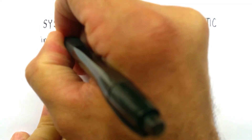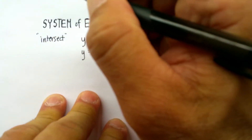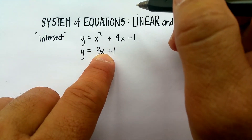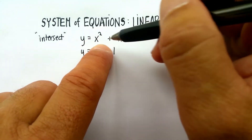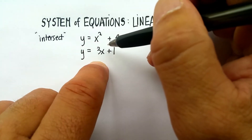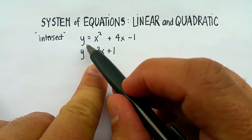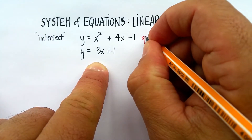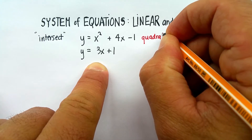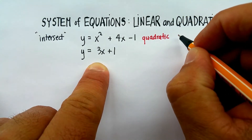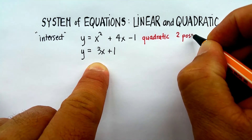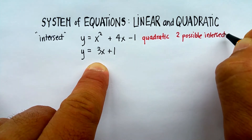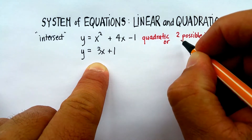You can tell how many solutions or intersections are possible by the degree of the equations involved. The degree is basically determined by the variable with the highest exponent. In this particular system, the quadratic has a degree of two — all quadratics have a degree of two — so there are probably two possible intersections, or roots. A root is simply a solution.